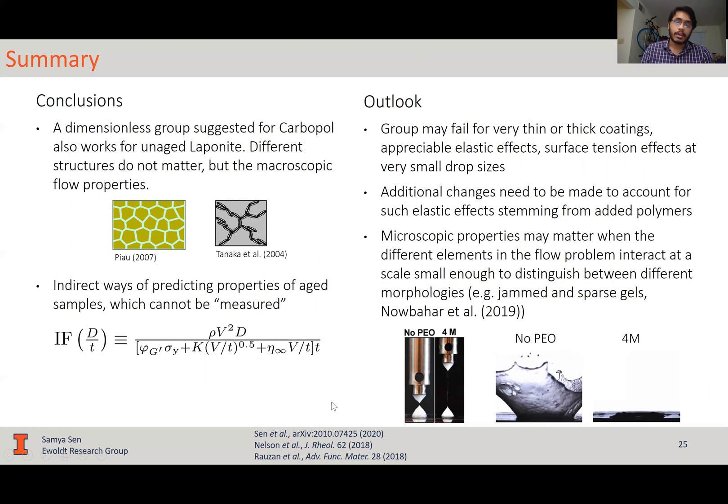Finally, microscopic properties may actually matter when the different elements in a fluid flow problem interact at a scale small enough for them to distinguish between different morphologies, for example, between sparse and jammed gels.